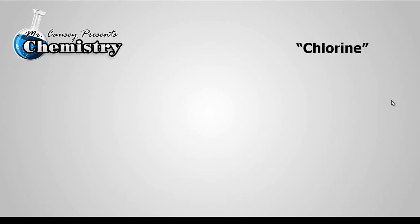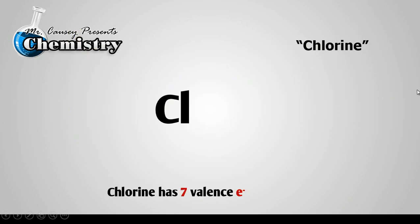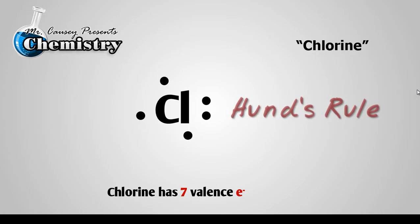Alright, let's look at chlorine. Here's writing the symbol down. Go into the periodic table and let's find chlorine. There it is. One, two, three, four, five, six, seven. It has seven valence electrons. So let's place them. One, two, three, four, five, Hund's rule, six, seven.